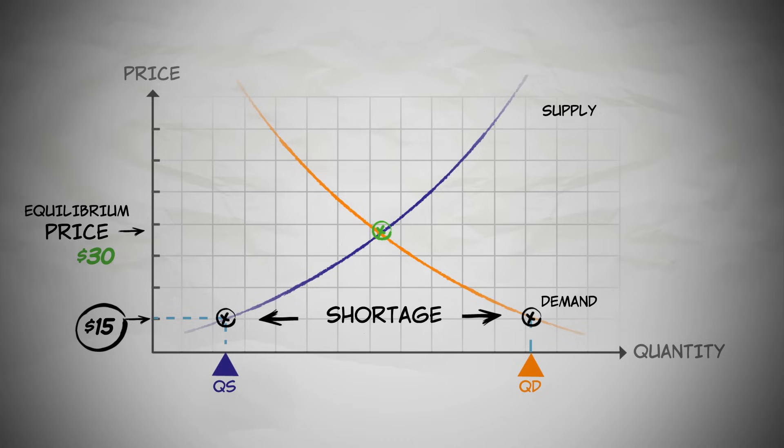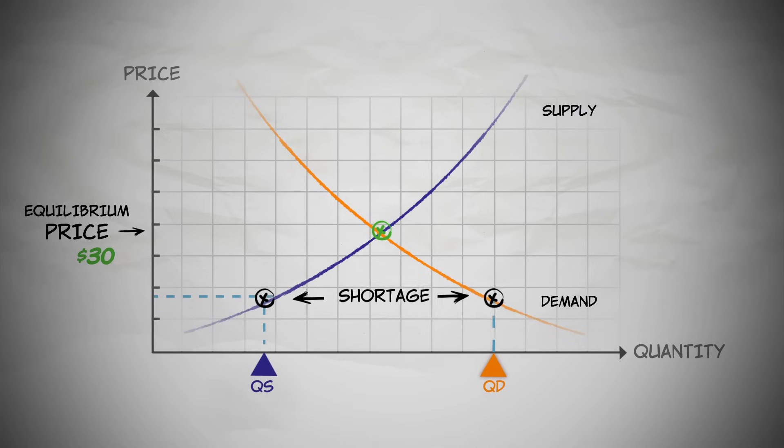When there's a shortage, buyers can't get as much of the good as they want at the going price, so they compete to buy more by bidding up the price. Now, since buyers are easy to find, sellers also have an incentive to raise the price. The price will continue to rise until quantity demanded is equal to the quantity supplied, and equilibrium is reached.